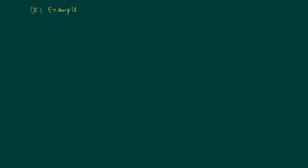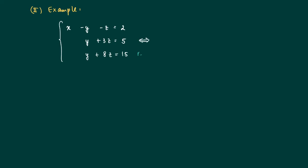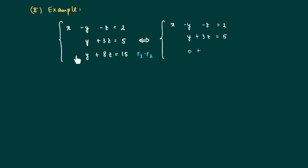Now look at a similar system: x minus y minus z equals 2, y plus 3z equals 5, and y plus 8z equals 15. We see there is a variable y in both the second and third rows. We can get rid of one y by subtracting row 2 from row 3, subtracting y plus 3z from y plus 8z, giving 15 minus 5.